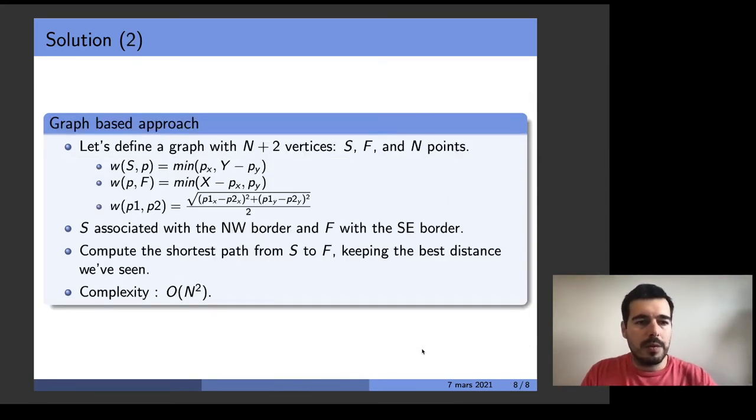Another approach is based on graphs. Note that the path we are to find either goes through the northwest border, the southeast border, or goes through the touching point of circles.